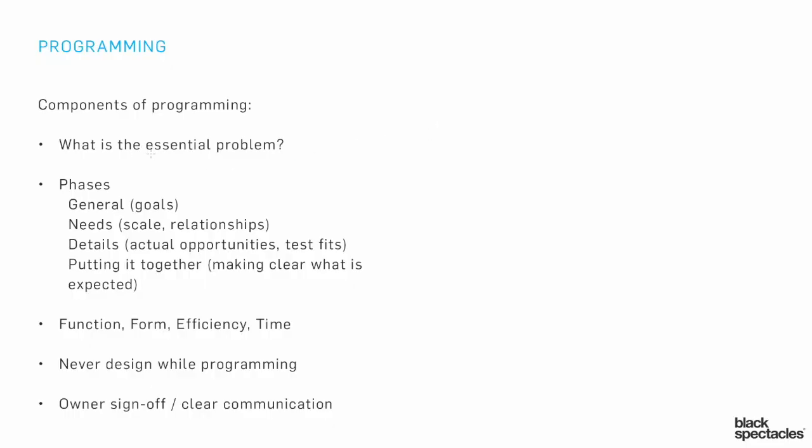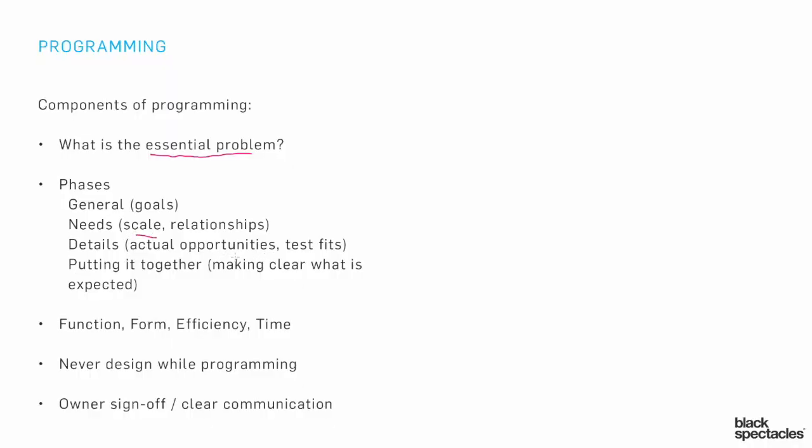When we're talking about programming, there are really two ideas happening. One is, we're looking at what's the essential problem — what's the core thing we're trying to do, the big idea, the real need. But then there's a whole bunch of specifics. We're trying to get both: the scale, what are the opportunities, the number of people — can we use test fits to check that data?